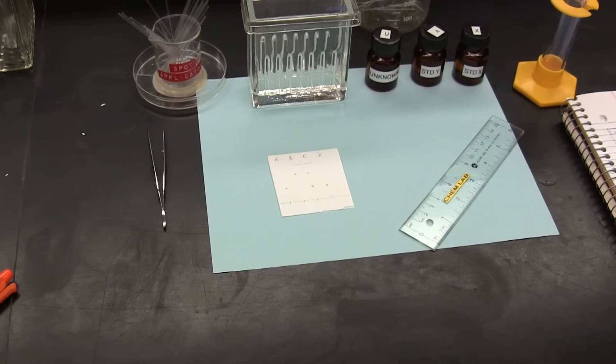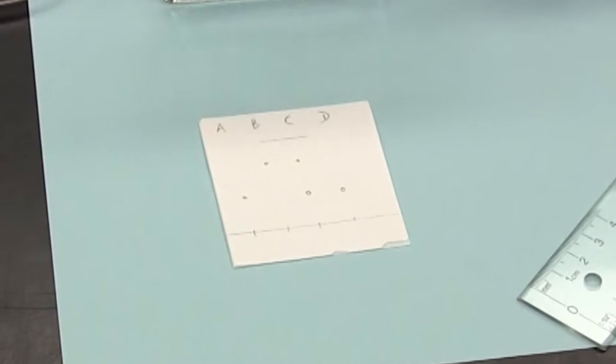And now that the plate is no longer under UV light, we can see all the spots together with the solvent front. Let's take a closer look at the results.